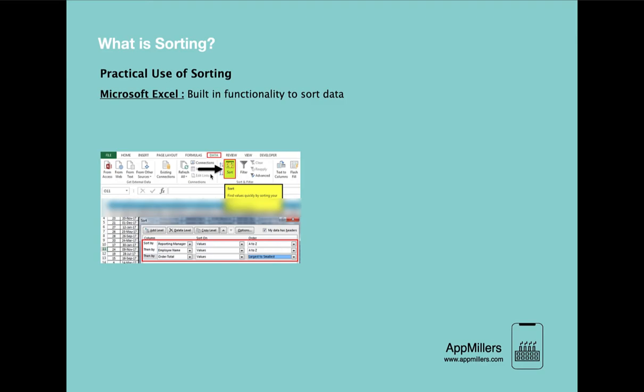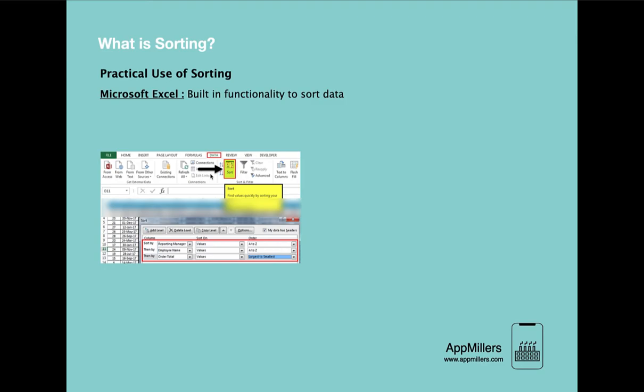Another practical example is online shopping. If you search online shopping websites, they have sorting options for their products. For example, on Amazon there are different criteria for sorting products — you can sort by review, by price, or by rankings. These are a few real-life examples of sorting.